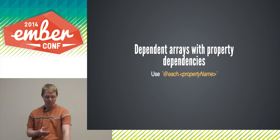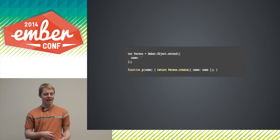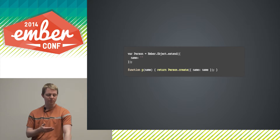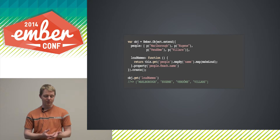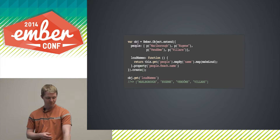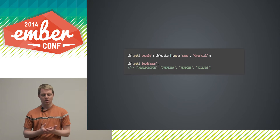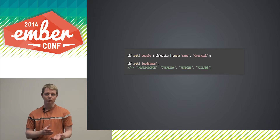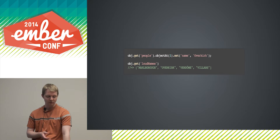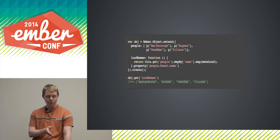How do we deal with them? We can use @each.propertyName. We'll use a helper to recreate the example with properties behind objects rather than simple strings. Now we have an array of people, and instead of depending on people.[], we depend on people.@each.name. We'll recompute the array not only when it gets mutated by additions or by swapping items, but also if any existing items have their name property changed. So if we swap out Eugene for Overkirk, that gets reflected in the computed array. But again, we're going to loop through the entire array to do that.